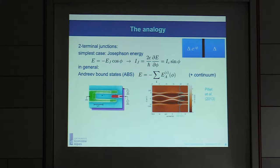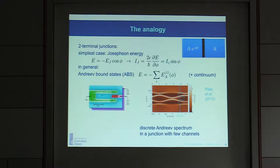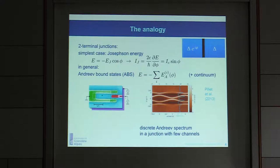While the current has been measured for a long time, a direct observation of these Andreev states is more recent. I'm showing an experiment where they really showed the sub-gap states as a function of the phase difference. The systems we are interested in are junctions which carry only a few channels, giving a discrete Andreev spectrum, as opposed to diffusive junctions with many channels that give a dense or continuous sub-gap spectrum.